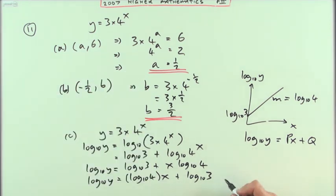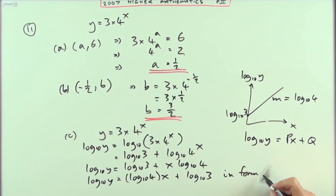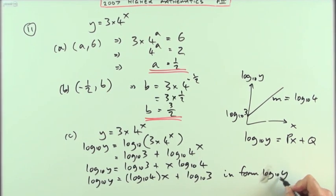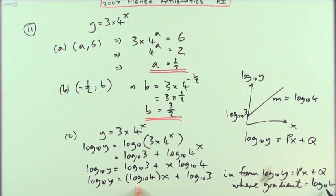So I'll say that's in the form log₁₀ y equals px plus q, where the gradient equals log₁₀ 4. That wasn't too bad after all.